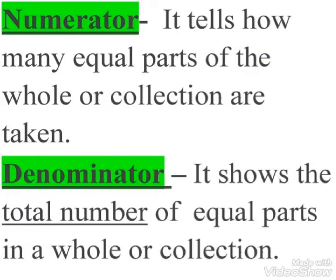The numerator tells how many equal parts of the whole or collection are taken. The denominator shows the total number of equal parts in a whole or collection.